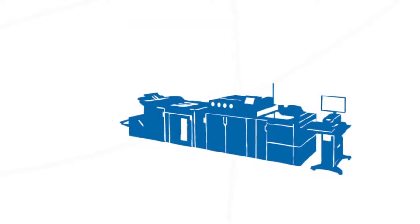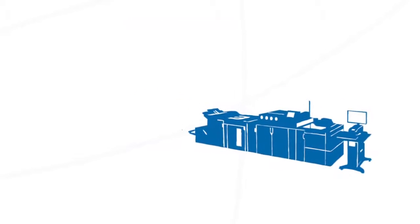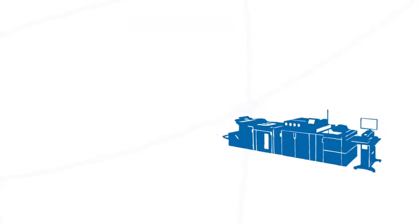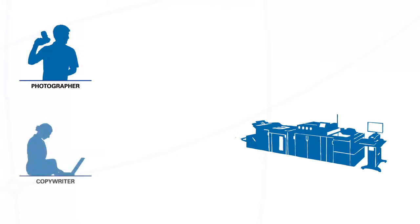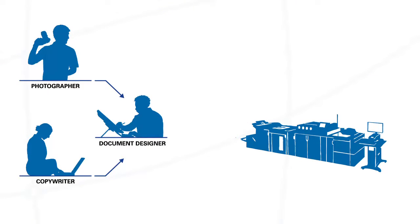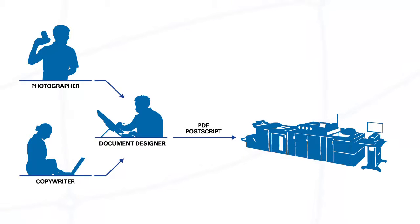Let's look at a typical workflow to create a newsletter. First, you need to get a few pictures from a photographer or other image sources. Next, a copywriter generates the content. Finally, this goes to a designer to compose all these elements using applications such as Adobe InDesign. The designer will then generate a PDF or PostScript file and send it to the printer for printing.